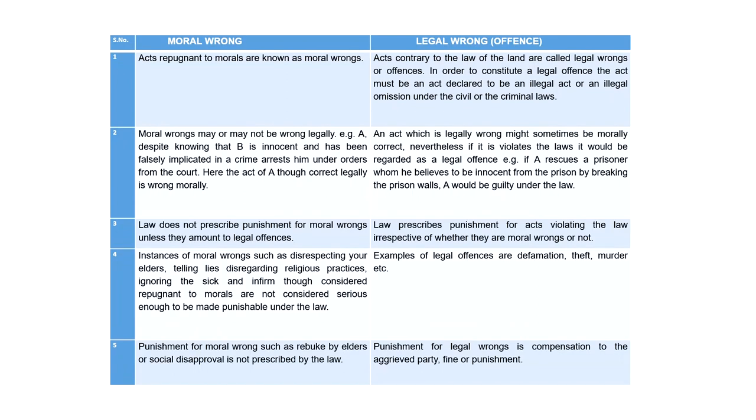Let us try to understand the difference between a moral wrong and a legal wrong. These are two terms which cannot and should not be used interchangeably. What is wrong morally may or may not be a legal wrong. Similarly, an act which has been declared to be a legal wrong by the state may or may not be morally wrong. Acts that are repugnant to morals are known as moral wrongs, whereas acts that are contrary to the law of the land are called legal wrongs or offenses. In order to constitute a legal offense, the act must be declared an illegal act or illegal omission either under civil laws or criminal laws.